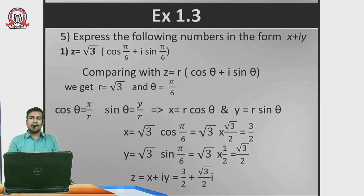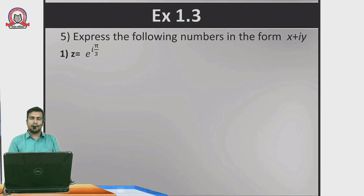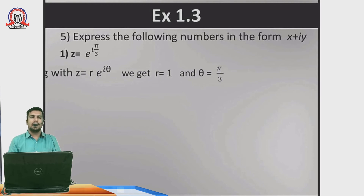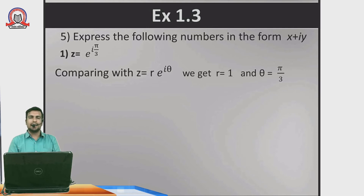For the exponential form example: z = e^(iπ/3). We compare with z = re^(iθ), giving r = 1 and θ = π/3. Converting: π/3 × (180/π) = 60°. So θ = 60°. Again, for radian measure concepts please see the relevant lecture on the SST Edupedia YouTube channel.